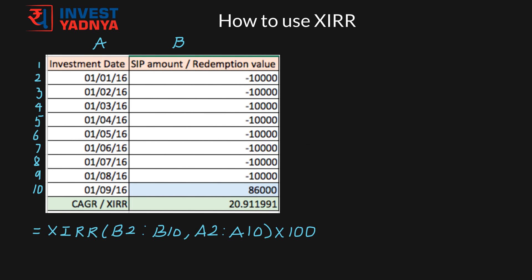For the ease of understanding, here we have considered an SIP investment duration of 8 months. In the first column, I have put in the SIP investment dates — as you can see, it is the first of each month. Then in column B, I have put in my investment value, which is 10,000 rupees each month. Put all your investments with a negative sign as it is an outflow.